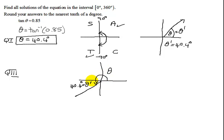Well, I'm going to rotate 180 degrees and add the reference angle. So theta is 180 degrees plus my reference angle of 40.4 degrees. So what's my answer in quadrant 3? It is 220.4 degrees.